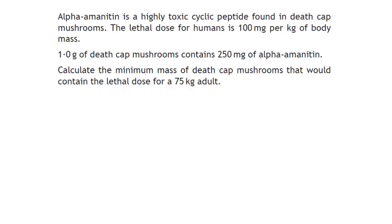Here's our first example. We're told the lethal dose for alpha-amanitin is 100 milligrams per kilogram of body mass, and we've been told that one gram of death cap mushrooms contains 250 milligrams of alpha-amanitin. Calculate the minimum mass of death cap mushrooms that would contain the lethal dose for a 75 kilogram adult. So the first thing we need to know is what is going to be our lethal dose for a 75 kilogram adult.